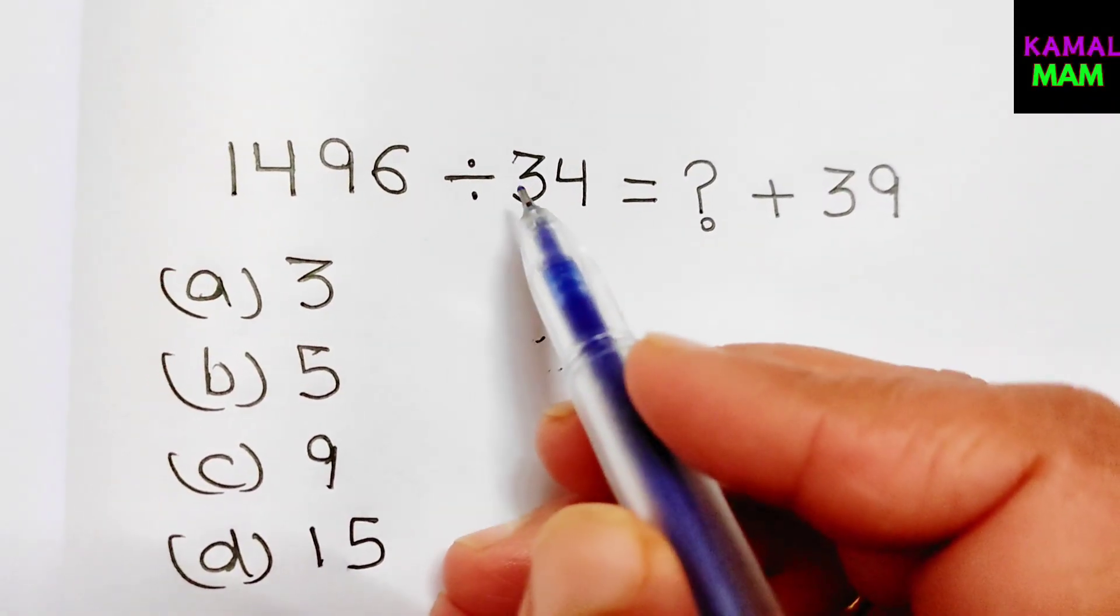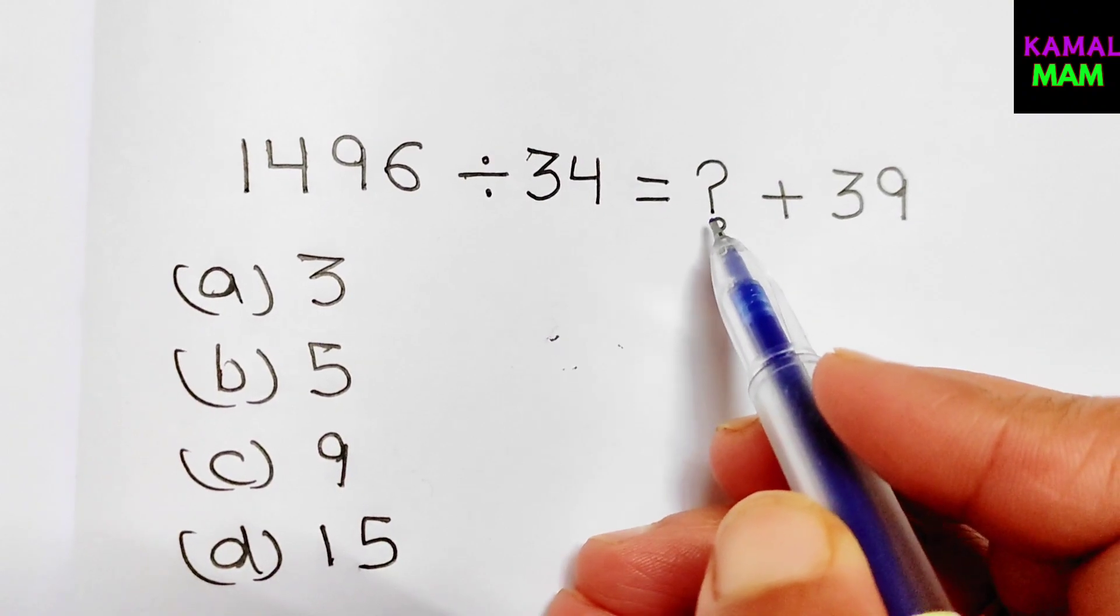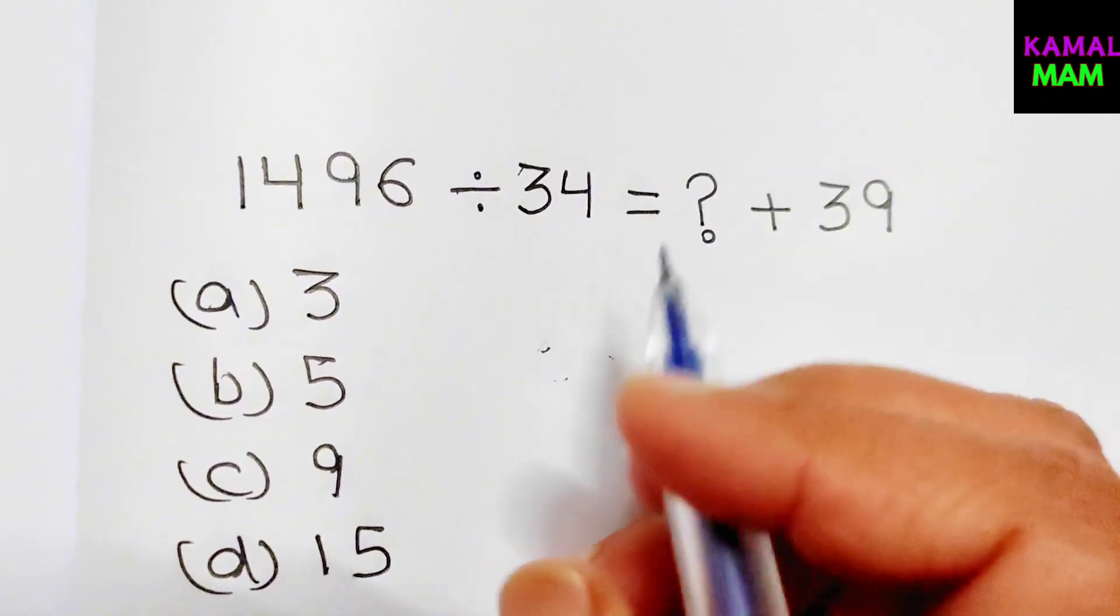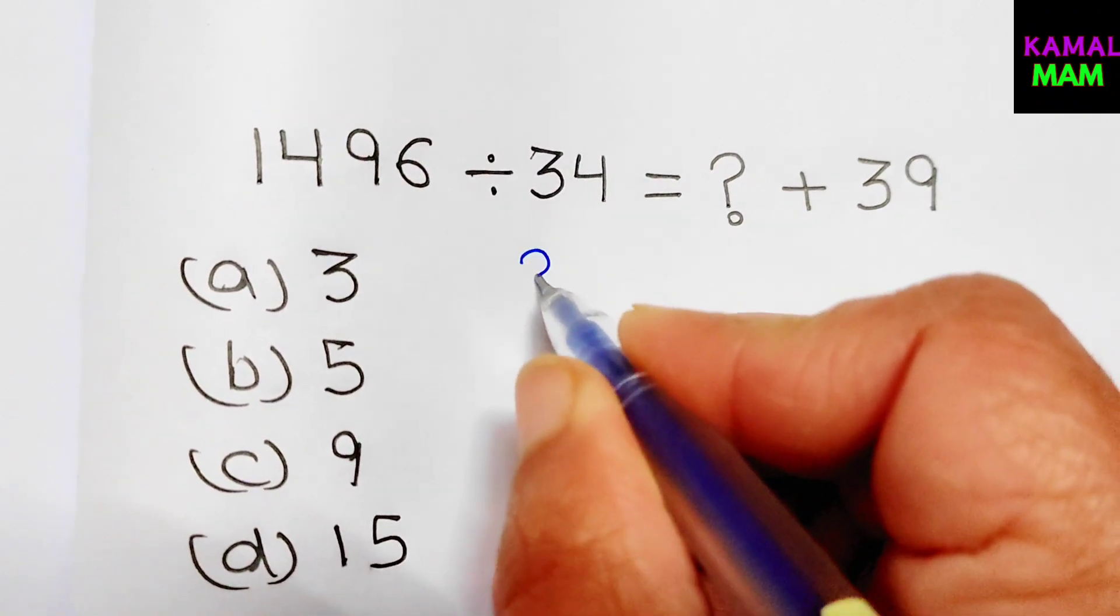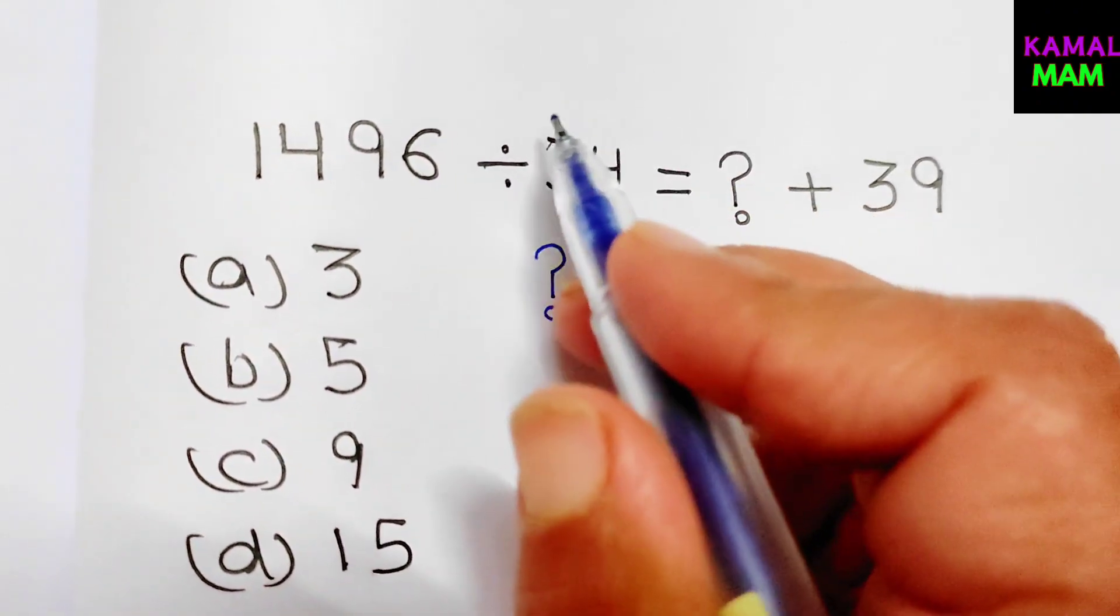1496 divided by 34 is equals question mark plus 39. So first of all, take question mark on one side and take 39 on the other side.